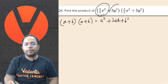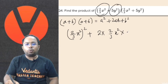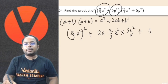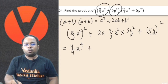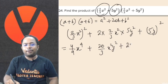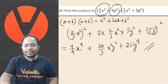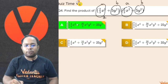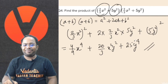So our a is 2 by 3 x squared and b is 5y squared. It becomes a squared plus 2 into a into b plus b squared. So: 2 by 3 squared is 4 by 9, x squared whole squared is x to the power 4. Plus 2 times 4 by 3 times 5 is 20 by 3, times x squared y squared. Plus 5 squared is 25, y squared whole squared is y to the power 4. The answer is 4 by 9 x to the power 4 plus 20 by 3 x squared y squared plus 25 y to the power 4.